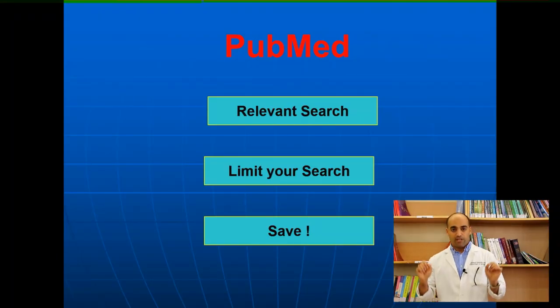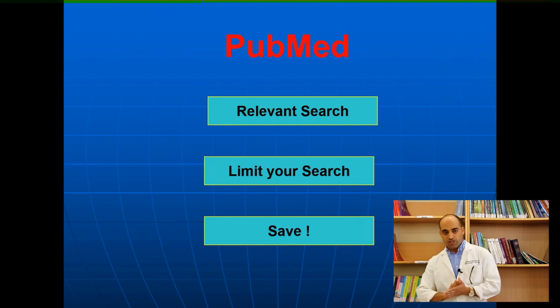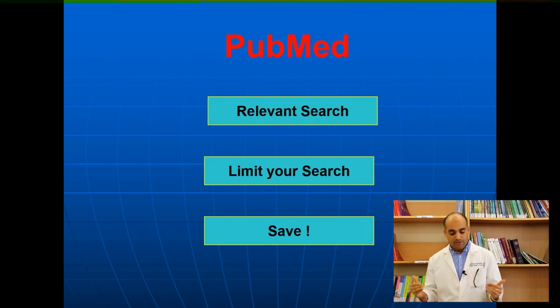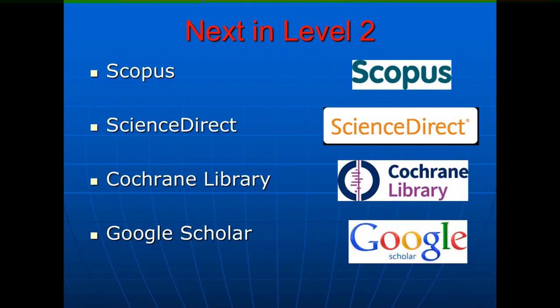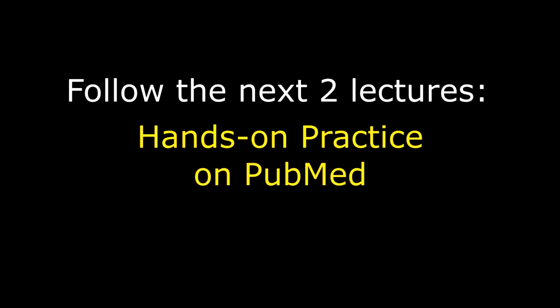In summary, PubMed — or any research engine — has three jobs: doing a relevant search, limiting your research, and saving your research. See you in the next lecture for hands-on practice on PubMed.